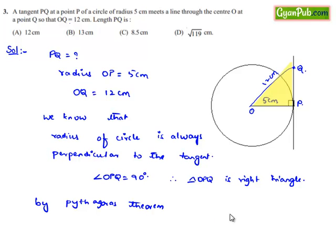Hypotenuse square is equal to side square plus side square. Here the hypotenuse will be OQ, therefore OQ² = OP² + PQ². That implies OQ is 12 here.